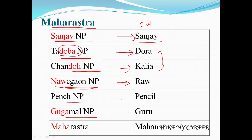Pench National Park code word is Pencil. Next, Gugamal National Park — code word is Guru. So Gugamal National Park code word is Guru.